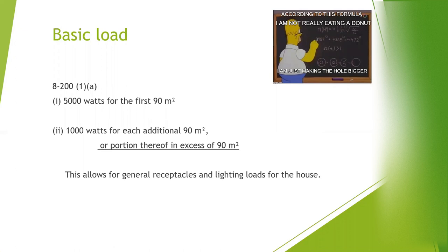For our basic load, looking at Rule 8-200, it says the load for a service or feeder supplying a single dwelling shall be based on the greater of items A or B. Focusing on item A, item i: a basic load of 5,000 watts for the first 90 meters squared, then 1,000 watts for each additional 90 meters squared or portion in excess of 90 meters squared. This accommodates the general receptacles and lighting loads in the house.